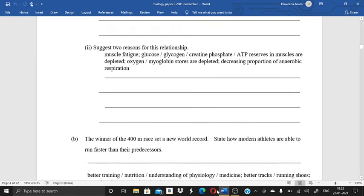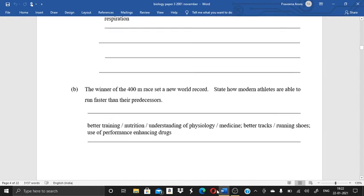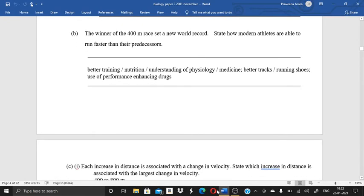Using only the data in the chart, outline the relationship between the distance of the race and the velocity of the winner. Second is, suggest two reasons for this relationship. Part B, the winner of the 400 meter race set a new world record. State how modern athletes are able to run faster than their predecessors. So over here I have given you the answer. The answer is better training, nutrition, understanding of psychology, medicine, better tracks, running shoes, use of performance enhancing drugs. So all these are the points which makes the athlete run faster.